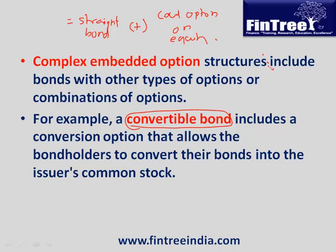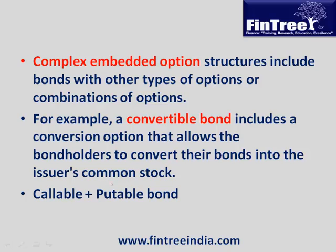With a convertible bond, you can decide whether you want to convert it into equity shares. Other complex structures include bonds that are both callable and putable, where at certain time periods the issuer has a choice and at others the investor has a choice. There are also chooser bonds, where after a certain time period you decide whether you want the option to work as a call or as a put. The key ones to know are the convertible bond and the callable-plus-putable bond.